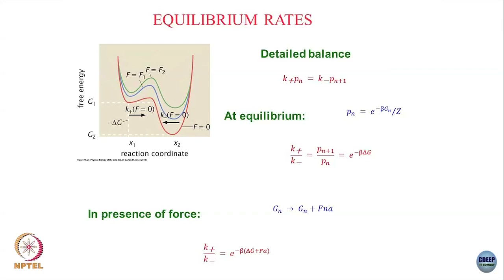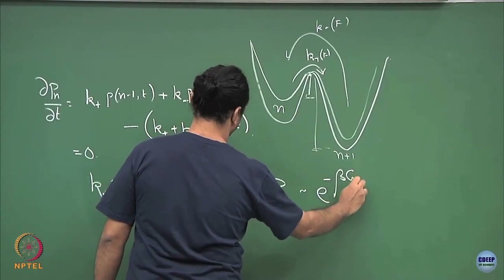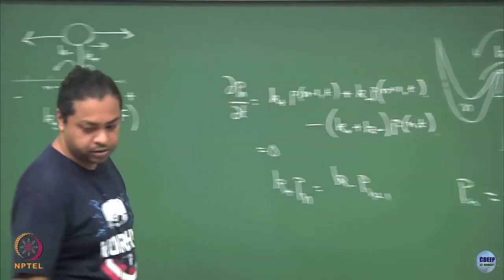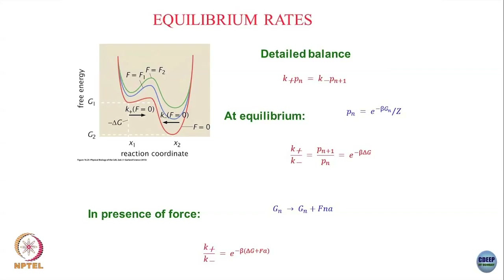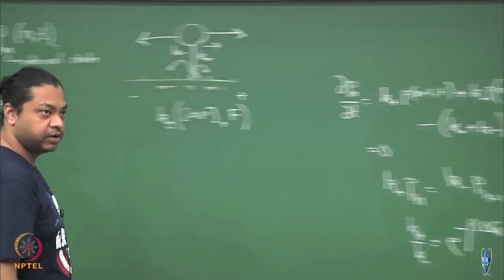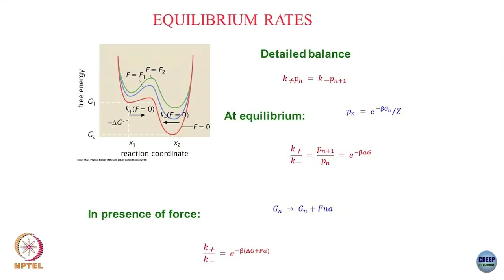At equilibrium, the probability for the motor to occupy a state is equal to e^(−β g_n) divided by the partition function. So these p_n's in an equilibrium approximation are like e^(−β times the free energy of that state) divided by the partition function. If I substitute p_n and p_{n+1}, I get the ratio of the forward and backward rates: k+ / k- = e^(−β Δg).